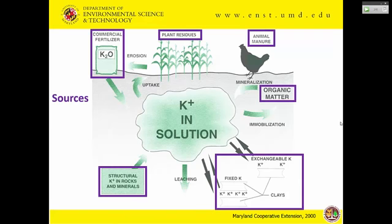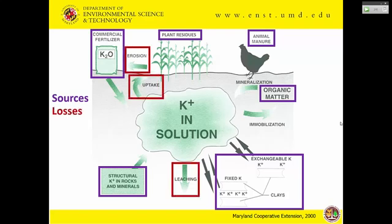This is a great way to visualize the potassium cycle. You'll notice a common theme with all nutrients — sources include fertilizers, plant residues, manures, and organic matter. There is also an exchangeable potassium pool in the soil, and a big soil solution pool in the middle. Losses include erosion — a concern because potassium stays in the soil and if soil moves, so will potassium — and there can also be leaching issues. There is also structural potassium that gets into rocks and minerals and never comes back.